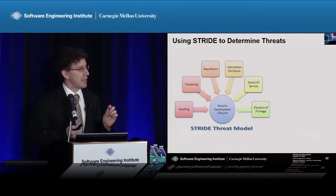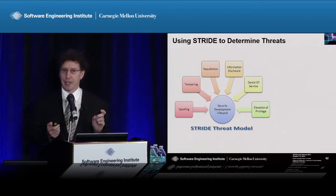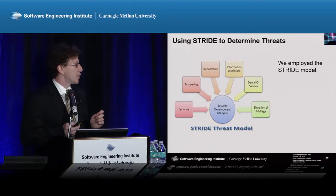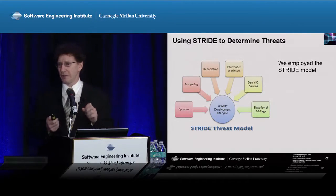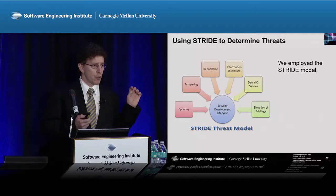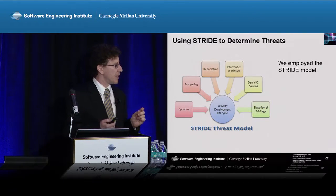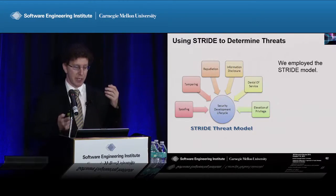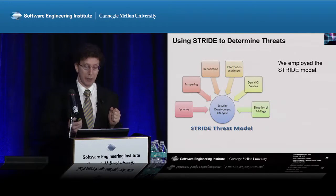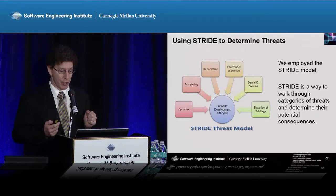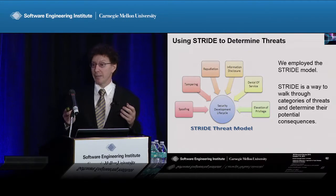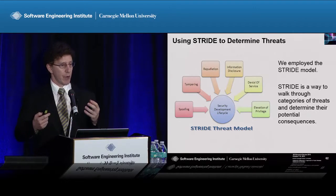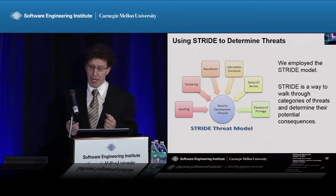We needed to reason about what kinds of threats this automotive electronics example would face. To explore this, we employed the STRIDE model, which originated at Microsoft a little more than a decade ago. STRIDE is an acronym made up of the initial letters of six kinds of threats: spoofing, tampering, repudiation, information disclosure, denial of service, and elevation of privilege. The idea of the STRIDE model is that it gives you a structured way of walking through different kinds of threats in a disciplined fashion to try and understand their consequences.